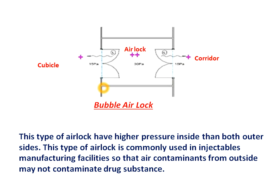This type of airlock is mostly used in injectable plants. In injectable plants there are fewer chances of cross-contamination because no particles are generated, but there is a high chance of biological contamination. Since there is high human movement in the corridor, humans generate more biological germs. To avoid these germs entering the cubicle — the injectable manufacturing area — the airlock is kept at higher pressure than both the corridor and cubicle, so air flows outward from the airlock to both sides, separating the two areas.